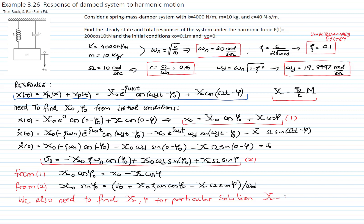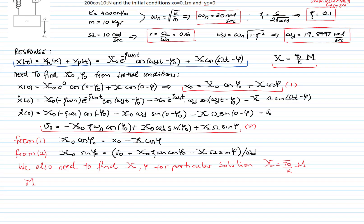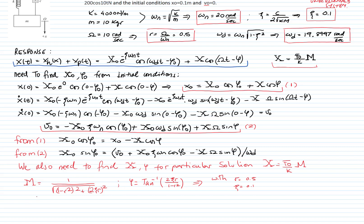We know the definition of the magnification factor M and the amplitude X, where X equals F0 over k divided by M. The magnification factor M equals one over the square root of (1 minus r squared) squared plus (2 zeta r) squared. The phase angle phi equals the inverse tangent of 2 zeta r over 1 minus r squared. With r equal to 0.5 and zeta equal to 0.1, we get M equal to 1.3216 and phi equal to 0.1325 radians.